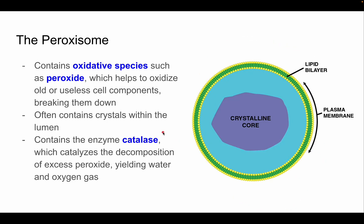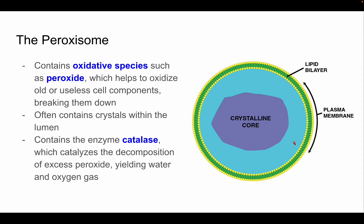The peroxisome is similar to the lysosome but contains oxidative species such as peroxide, which helps oxidize and break down older, useless cell components. It often contains crystals within the lumen visible under a microscope. Peroxisomes contain the enzyme catalase, which catalyzes excess peroxide — which could be harmful to the cell — yielding water and oxygen gas.